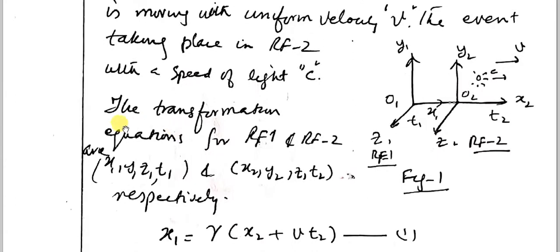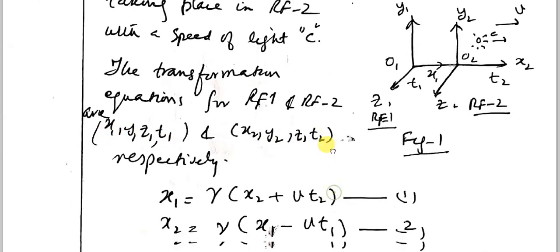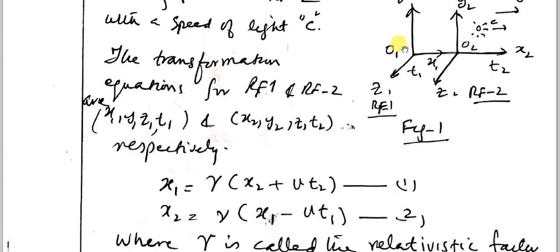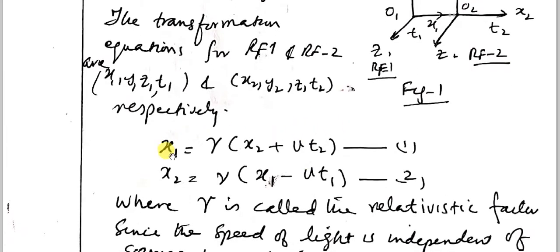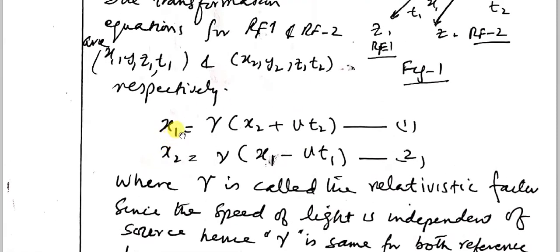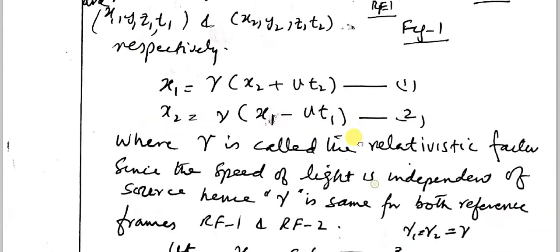Now the transformation equations for Rf1 and Rf2 involve coordinates x1, y1, z1, t1 and x2, y2, z2, t2 — that is, the coordinates of reference frame 1 and reference frame 2, origin 1 and origin 2. So x1 is equal to gamma times (x2 plus v·t2), which is equation number 1. And x2 is equal to gamma times (x1 minus v·t1), which is equation number 2. Here gamma is called the relativistic factor.